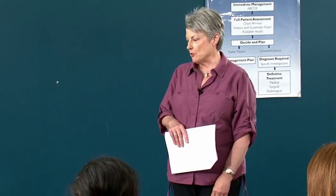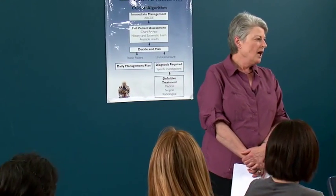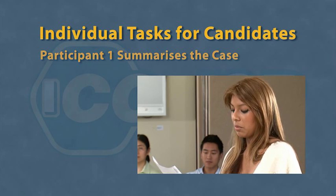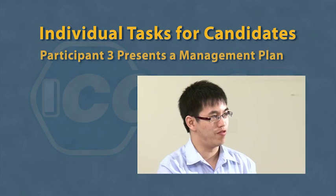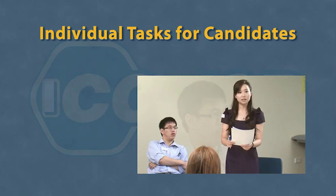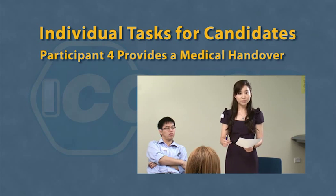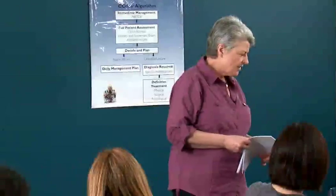After the instructor has outlined the aims and objectives of the surgical ward round, they should provide the candidates with a brief for the session: 'We've got 30 minutes to start assessing the patient. I want you to work in pairs so the person that you're sitting next to will be who you're working with.' Each candidate will also be assigned an individual task: Participant 1 summarises the case; Participant 2 describes their assessment using the CRISP algorithm; Participant 3 presents a management plan; and Participant 4 will communicate with a member of the other group in the form of a medical handover at the end of a shift. The instructor should assign an individual task to each candidate before the review process begins.